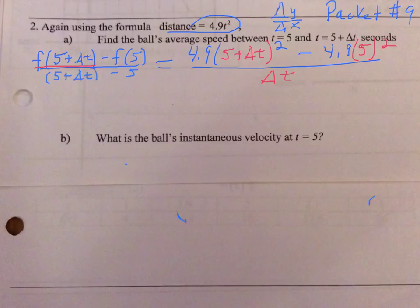Moving on a little bit, we need to do some algebra, which means I need to take the 4.9, and I need to multiply it by the 5 plus delta t squared. That means I have to either do a box or FOIL, whichever way you think about it.